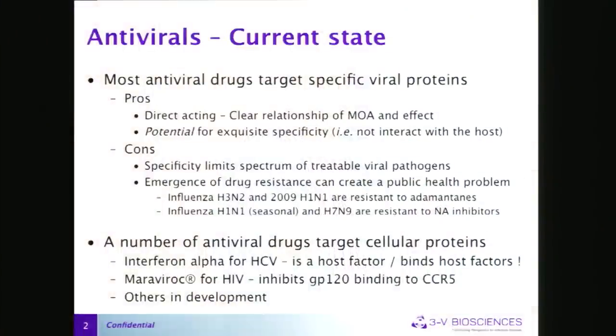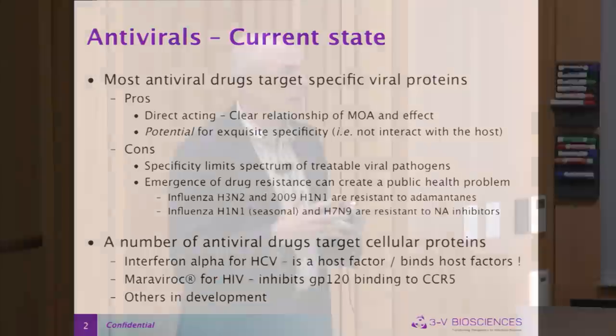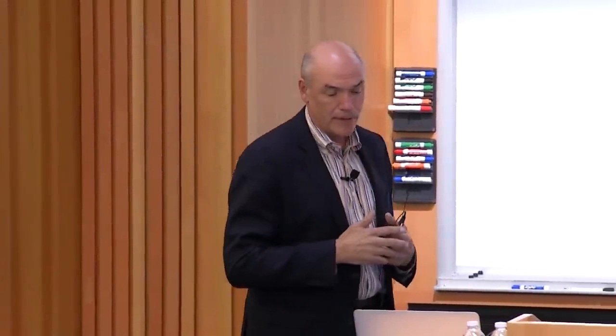When we talk about host factor antivirals, there's often an 'oh, that seems frightening' reaction. But there are already host factor antivirals out there — interferon alpha for hepatitis C and certain HBV indications, maraviroc which targets CCR5 where the GP120 protein binds for HIV, and recently an Hsp90 inhibitor for RSV from Berkeley and UCSF was described in PLOS Pathogens. I think it's a great credit to the virology community that we're approaching it from different perspectives.